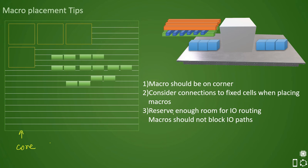The third rule was to reserve enough room for routing. Macros should not block the IO paths — if you have pins around the bottom right corner, your macros should not be placed there unless there is a very critical path. There should be enough room for routing the interface paths.